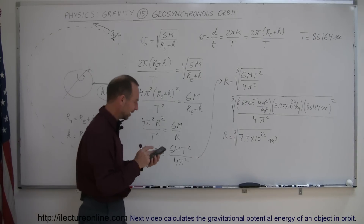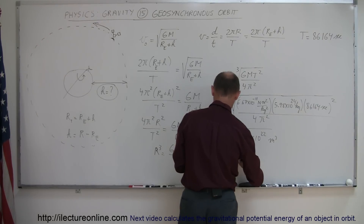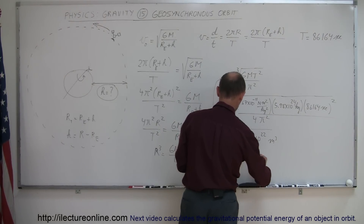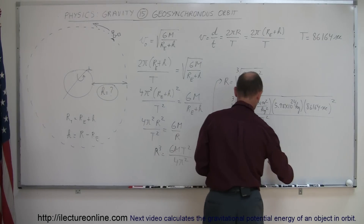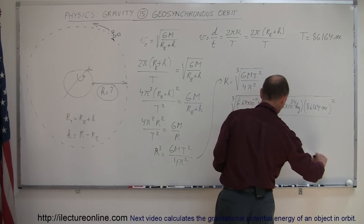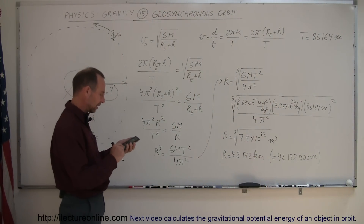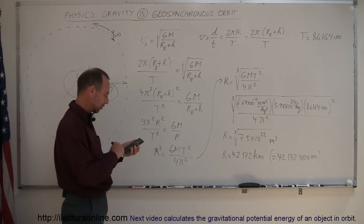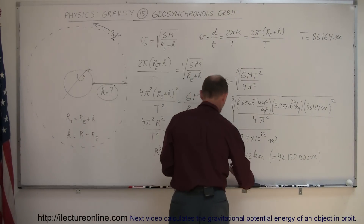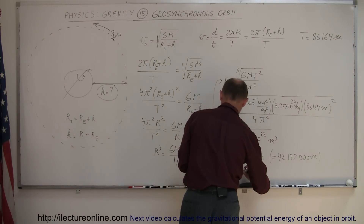It took me a little while — I was making a mistake in my calculator — but now we have r equal to 42,172 kilometers, which is 42,172,000 meters. Converting to miles by dividing by 1.609, that gives approximately 26,210 miles. This is the total distance from the satellite to the center of the earth.